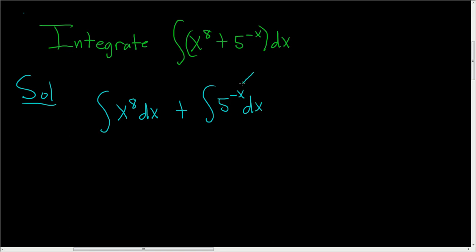So we can either make a u substitution here or we can play a funny game. Note 5 to the minus x, you can write this as 1 over 5 to the x using properties of exponents. And this is the same thing as 1 to the x over 5 to the x, which is the same thing as 1 fifth to the x.